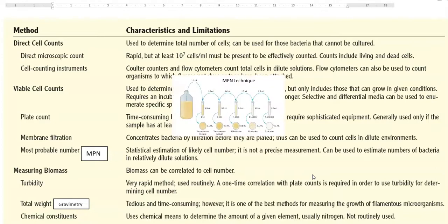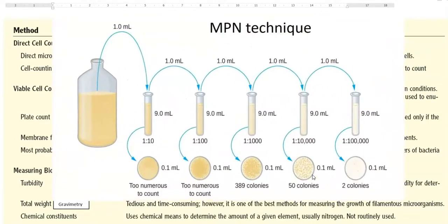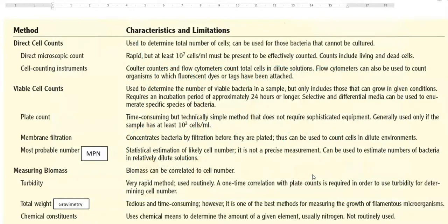The most probable number is a statistical estimation of likely number of cells that could be present there in the sample. So automatically it is not a correct or precise measurement but an approximate number of cells could be counted by using this method. It is also again used to estimate the number of bacteria in relatively dilute solutions.